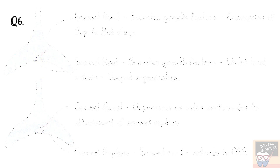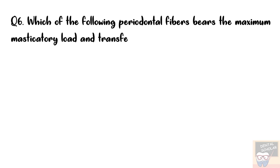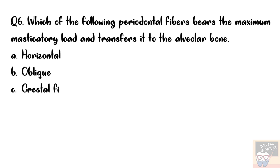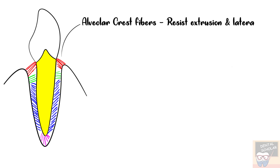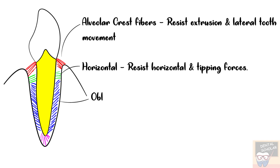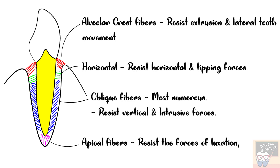Question number 6: Which periodontal ligament fibers bear the maximum masticatory load and transfer it to the alveolar bone? Options are horizontal, oblique, crestal fibers, and apical fibers. The answer is option B, oblique fibers. The alveolar crest fibers resist extrusion and lateral tooth movement, while horizontal fibers resist horizontal and tipping forces. Oblique fibers are the most numerous PDL fiber group and resist vertical and intrusive forces, bearing masticatory force and transferring it to alveolar bone as tension. Apical fibers resist luxation forces and may prevent tooth tipping.